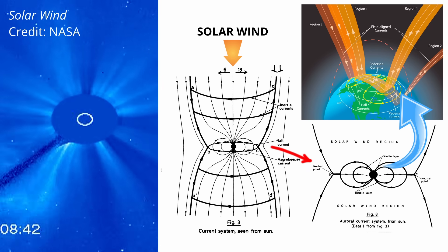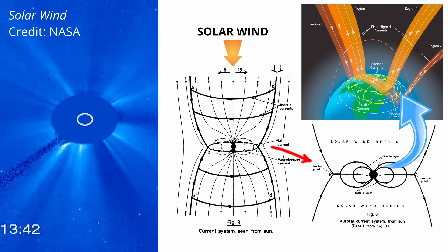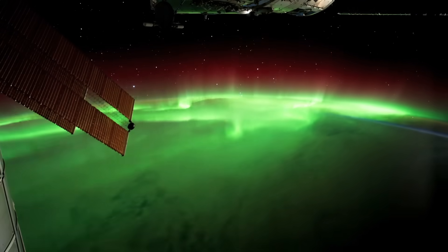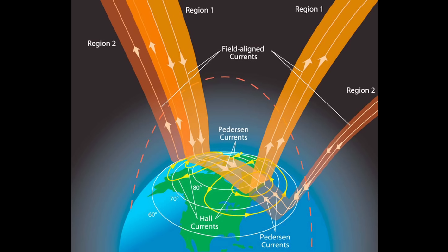You can see a similar principle in the auroral circuit. Field-aligned currents flow invisibly, carrying energy from the solar wind into the upper atmosphere. Only when a potential drop accelerates electrons enough to collide with a dense neutral atmosphere do we see the familiar auroral glow. Here, Earth's magnetic field plays an important role, guiding the currents along its lines and spreading them into broad sheets rather than letting them collapse into narrow filaments.